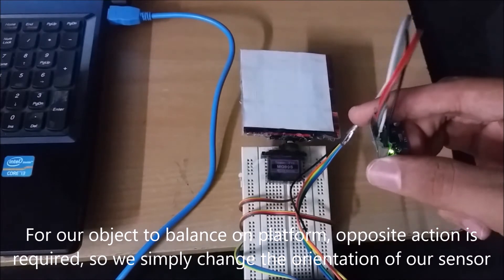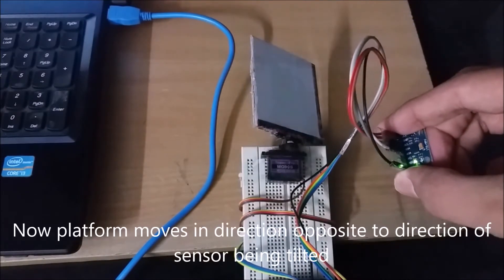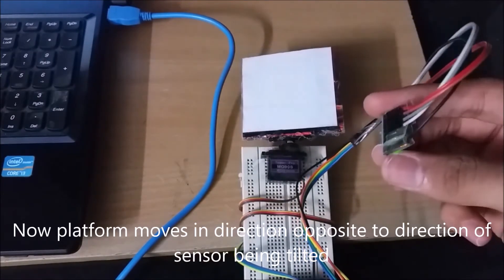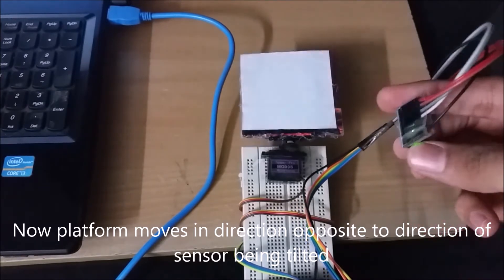So we simply change the orientation of our sensor. Now platform moves in direction opposite to direction of sensor being tilted.